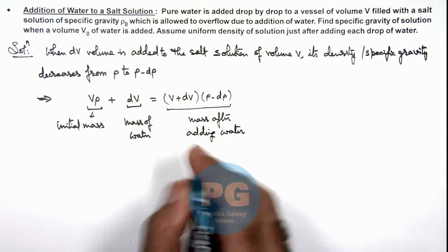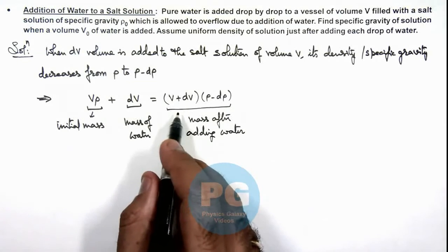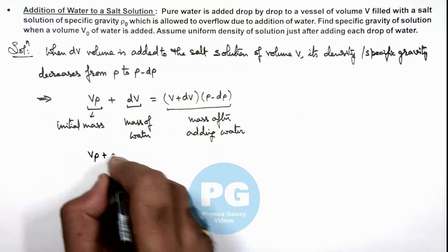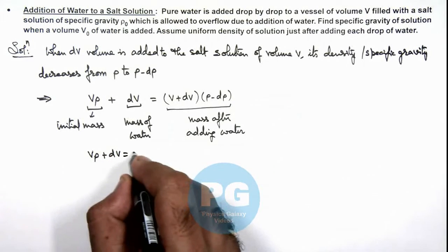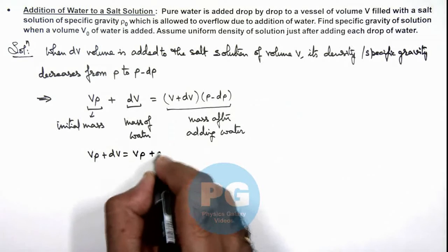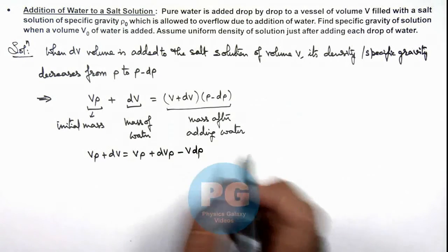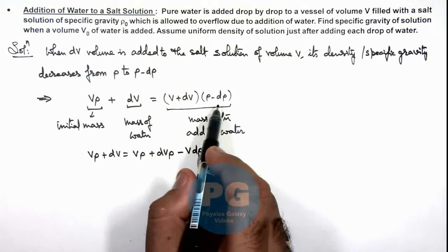Now in this relation, if we further simplify and open this, it gives Vρ plus dV is equal to Vρ plus dV·ρ minus V·dρ, and product of two elemental quantities we can neglect.